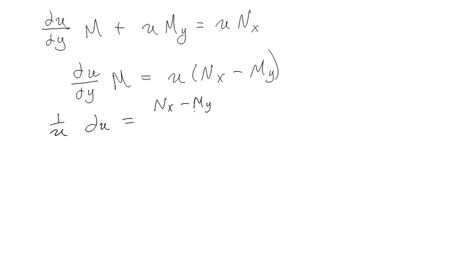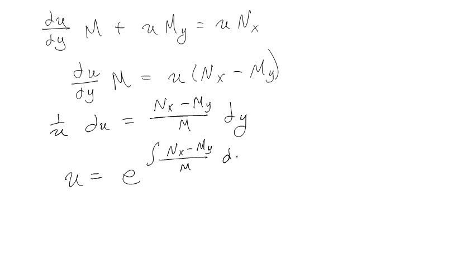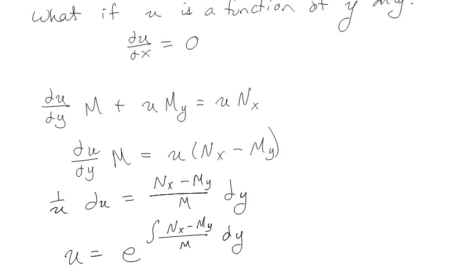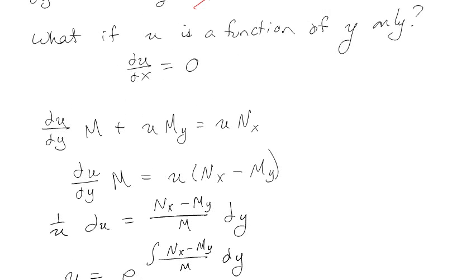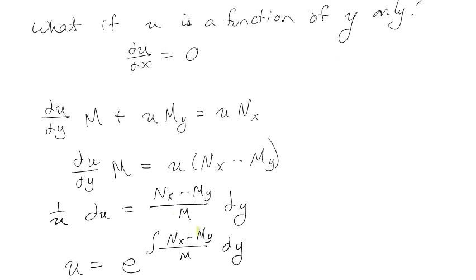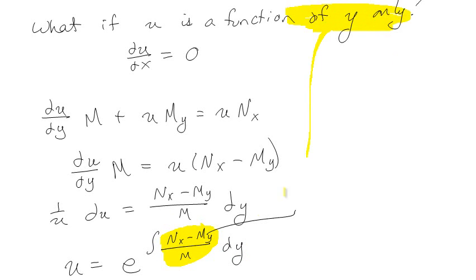This gives us (1/u) du = (Nx - My)/M dy. The standard form solution is u equals e to the integral of (Nx - My)/M dy. And remember, u is a function of y only, so the only way this works is if the integrand (Nx - My)/M is also a function of y only.